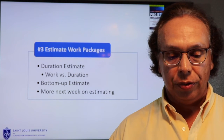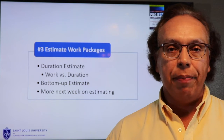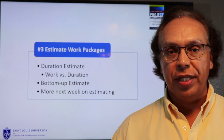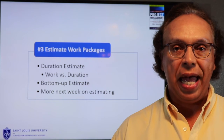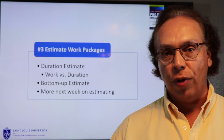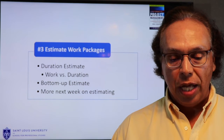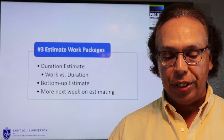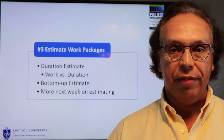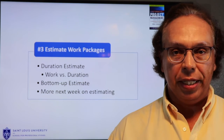Step three is estimating the work packages. You need to understand the difference between work and duration. Work is the amount of time that it takes to complete a task; duration is calendar time. For instance, it may only take four hours to pour a concrete pad, but it will take another four days for that pad to dry before you can build on it — so the work is four hours, but the duration is four days. Bottom-up estimates need to include not only the labor, but the equipment, materials, and other supplies. When doing your bottom-up estimating, consider skill level and productivity — experts will complete a task much quicker than a novice. We'll talk more about estimating next week.